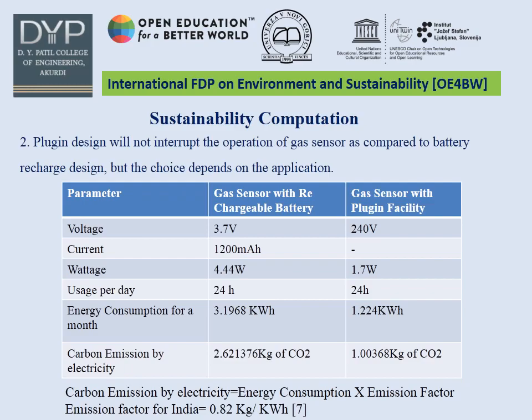A gas sensor with plug-in facility has a wattage of 1.7W. If we use the gas sensor for 24 hours a day, the energy consumption will be 3.1968 kWh for the gas sensor with rechargeable battery and 1.224 kWh for the gas sensor with plug-in facility. Carbon emission by electricity is calculated as energy consumption multiplied by emission factor. The emission factor for India is 0.82 kg per kWh. So, for the rechargeable battery gas sensor, it is estimated as 2.621376 kg of CO2, and for the gas sensor with plug-in facility it is 1.00368 kg of CO2.